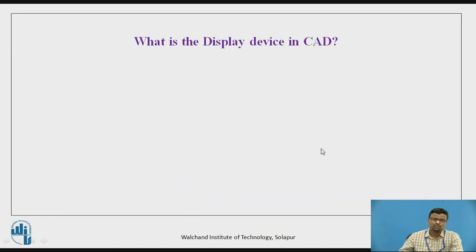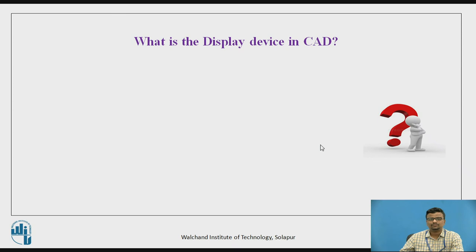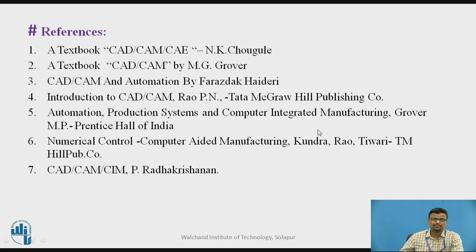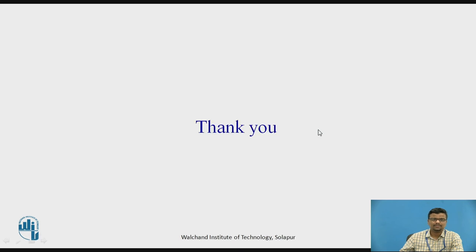There is one question for you: what is the display device in the CAD computer design system? Think about this question. The name of the display device in the computer-aided design system is the graphic terminal, or maybe the cathode ray tube. These are the references. Thank you.